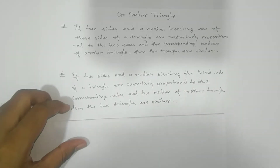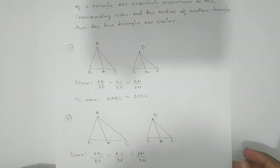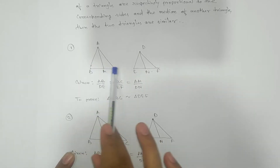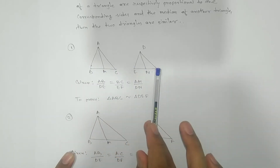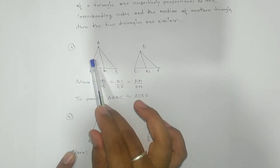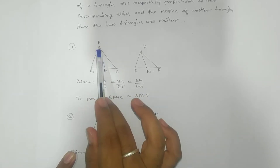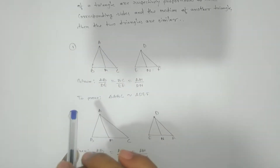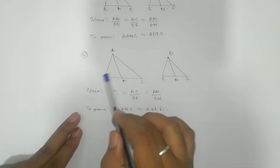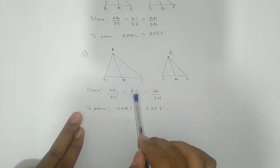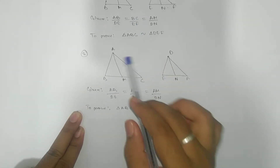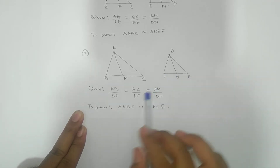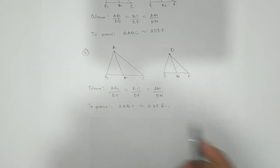In the first problem, we have two triangles ABC and DEF. It is given that AB/DE = BC/EF = AM/DN, where AM and DN are medians. The key difference from the second problem is that here we use BC/EF in the ratio, whereas in the second problem we use AC/DF instead of BC/EF — that is the difference we need to keep in mind.